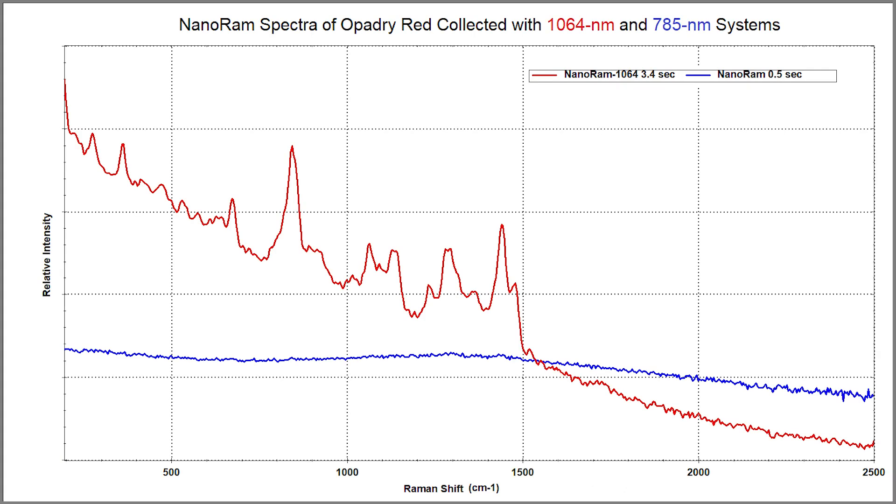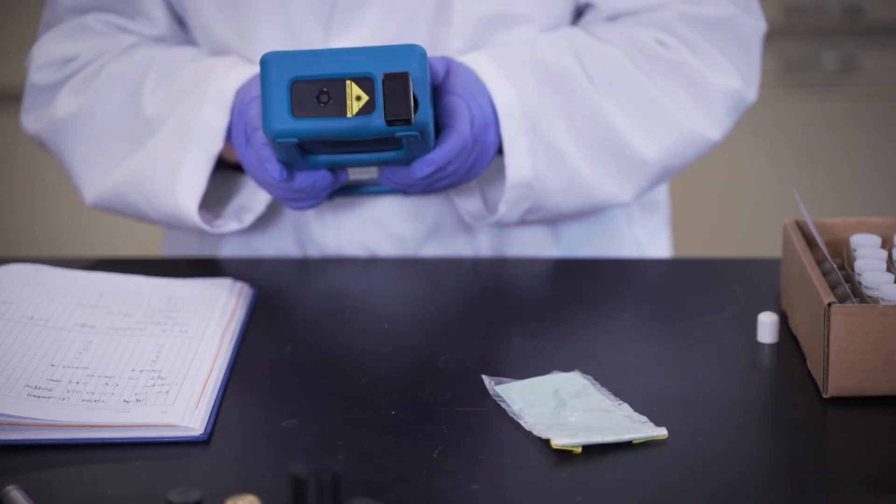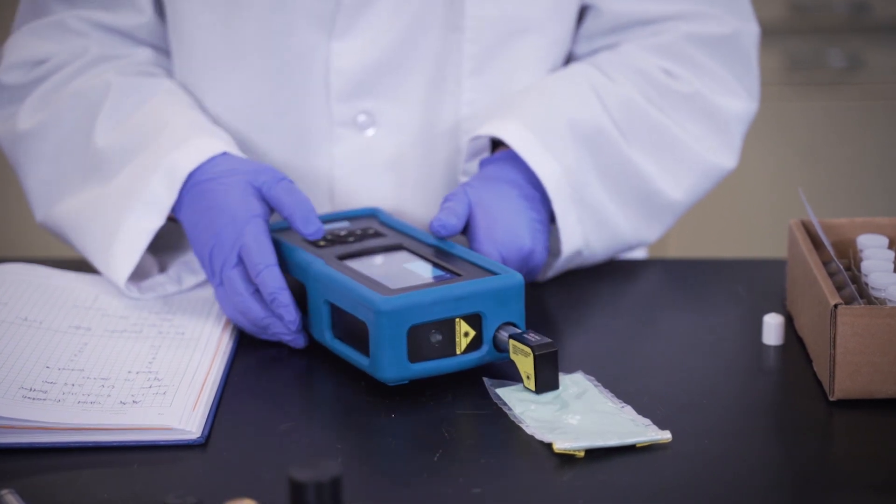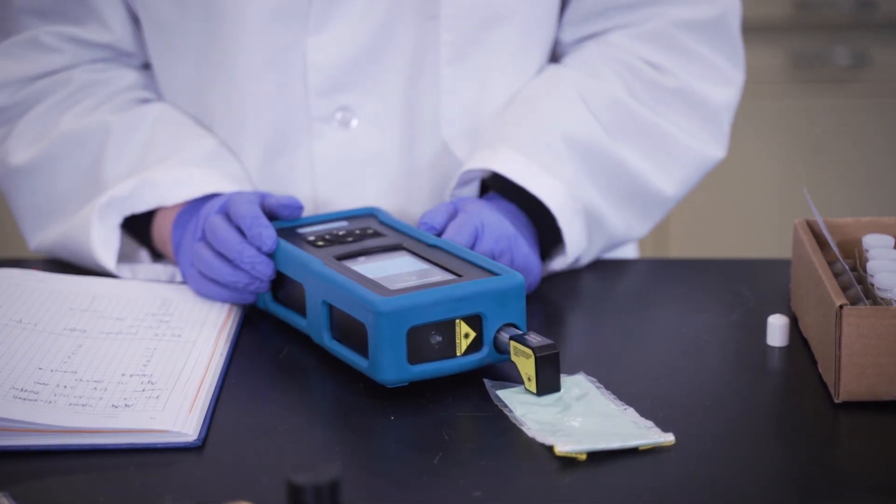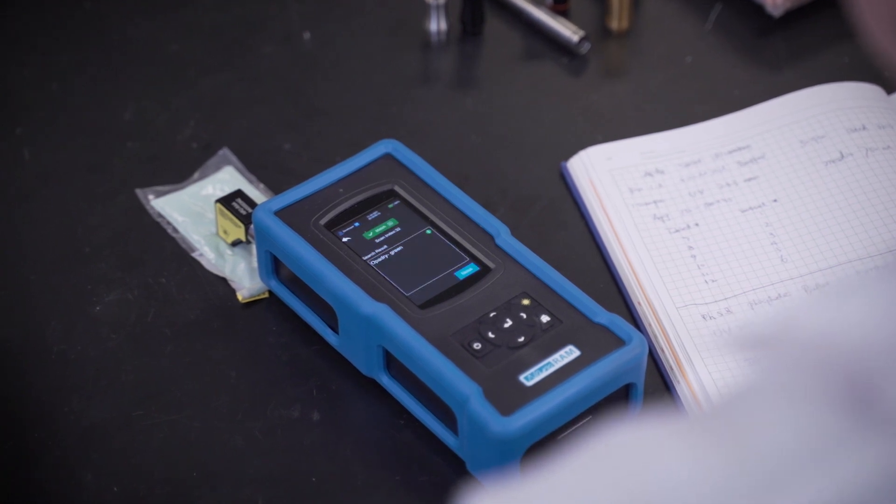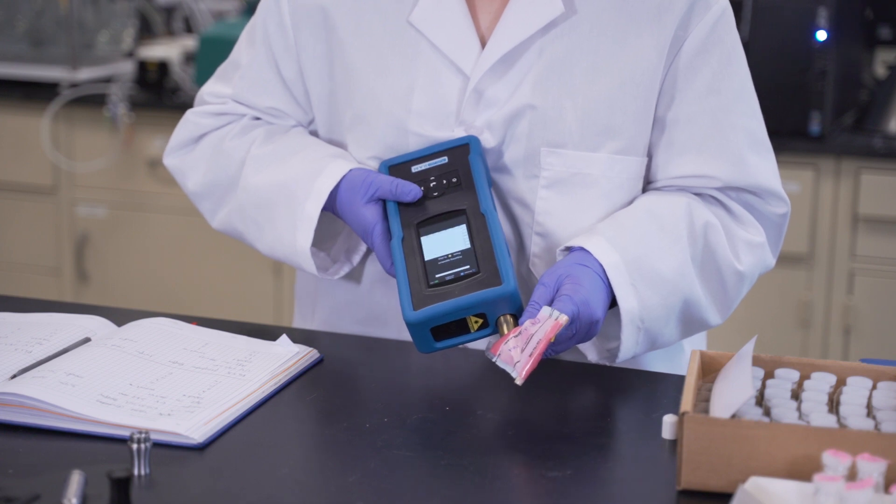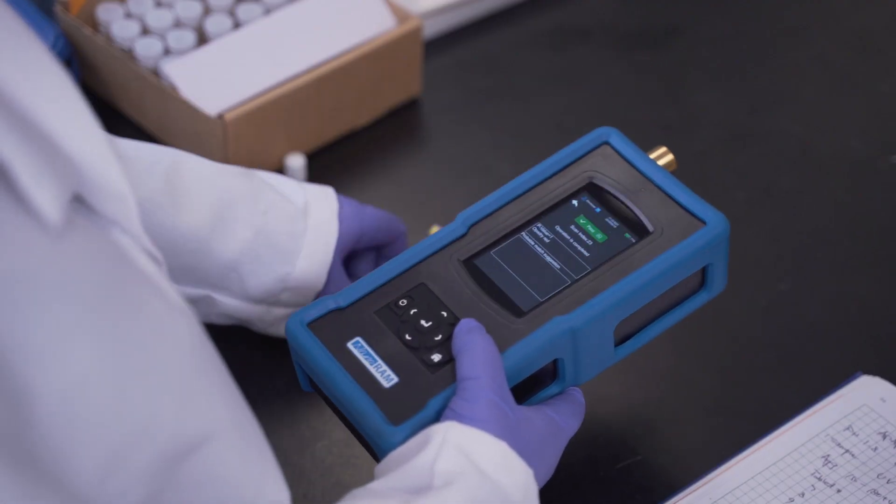The NanoRAM 1064 utilizes the longer 1064 nanometer wavelength, allowing pharmaceutical users to effectively and positively identify close to 100% of their incoming raw materials. Patented ST-Raman technology uniquely helps to prevent sample burning and improves scanning breadth and depth.